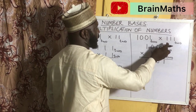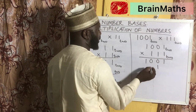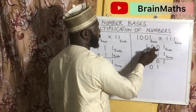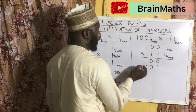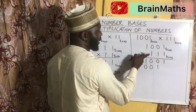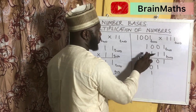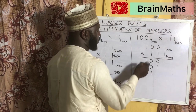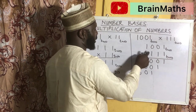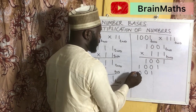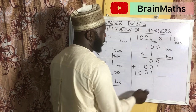For the second row: 1 times 1 is 1, 1 times 0 is 0, 1 times 0 is 0, 1 times 1 is 1. And the last line will be 1 times 1 is 1, 1 times 0 is 0, 1 times 0 is 0, 1 times 1 is 1. So now we add everything together.